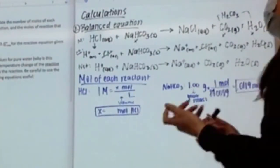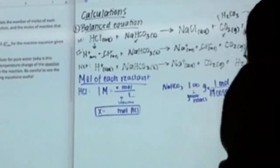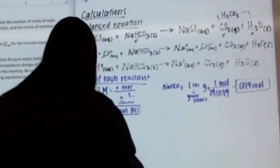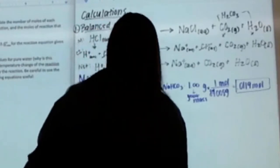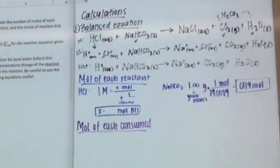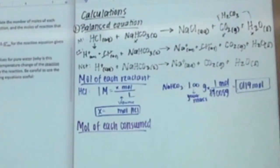The next part asks for moles of each reactant consumed. Looking at the balanced equation, it is a one-to-one ratio. One of these is the limiting reactant — it shouldn't matter how much of each you use, we should all have the same limiting reactant. Looking at your values and knowing it's a one-to-one ratio, which one was the limiting reactant? It should be the baking soda.